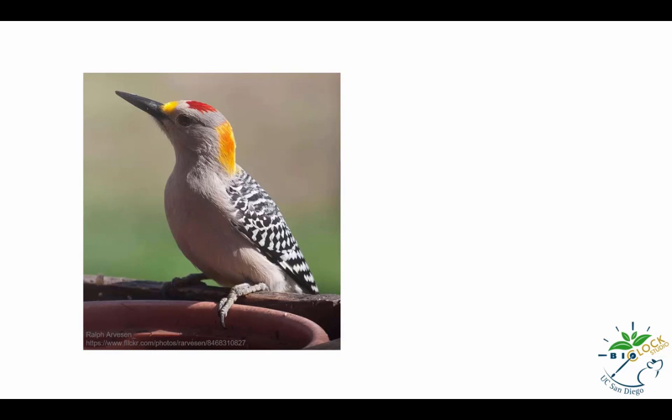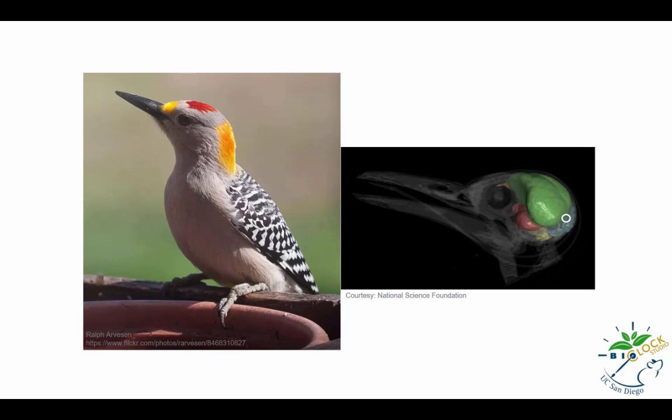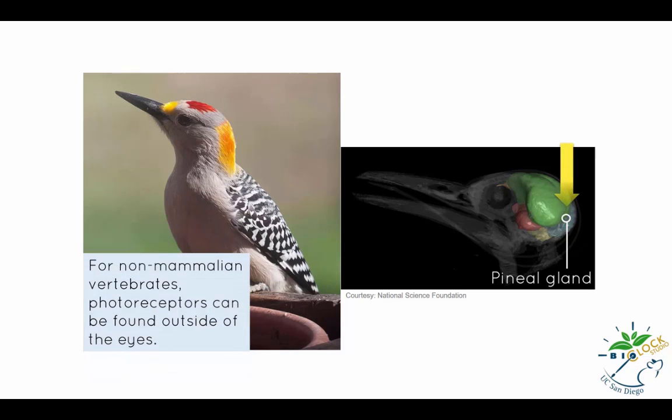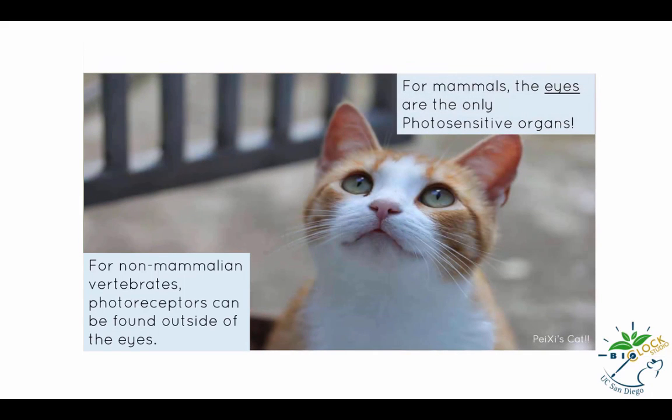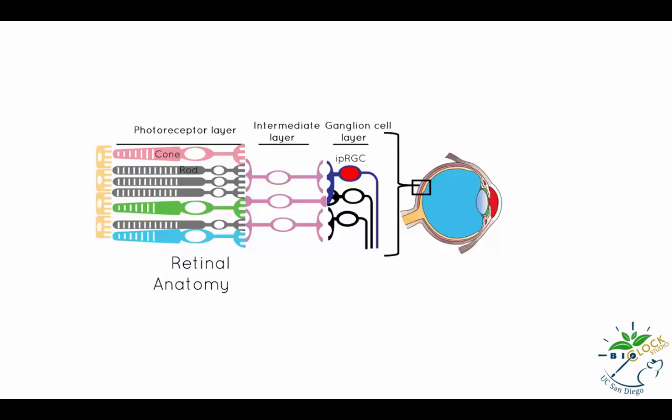Although non-mammalian vertebrates have photosensitive organs outside of the eyes, such as the pineal gland in birds, a large body of studies show that eyes are the only photosensitive organ to control vision in mammals. In mammals, the retina is located at the back of their eyes, where the light entered from the cornea is projected to.